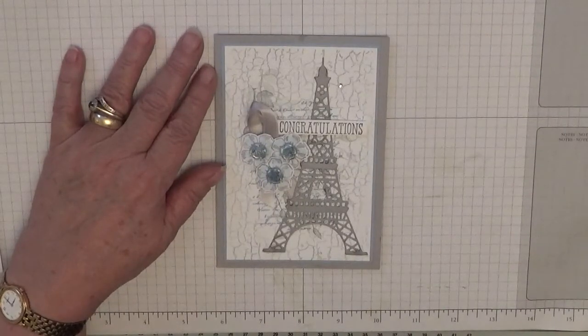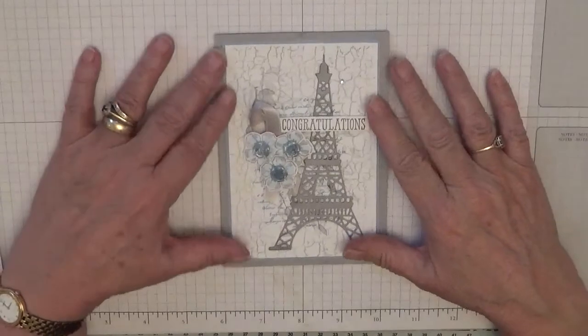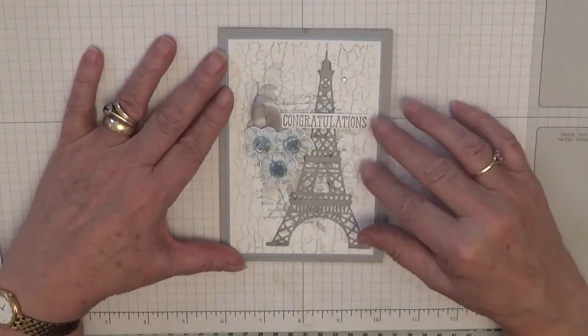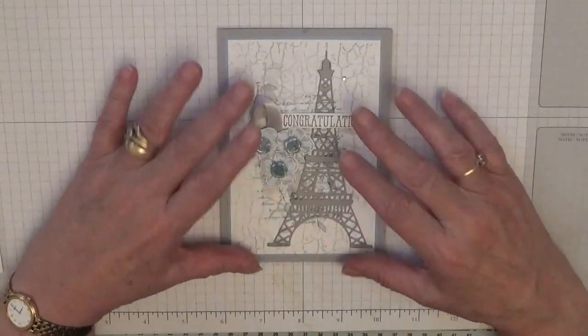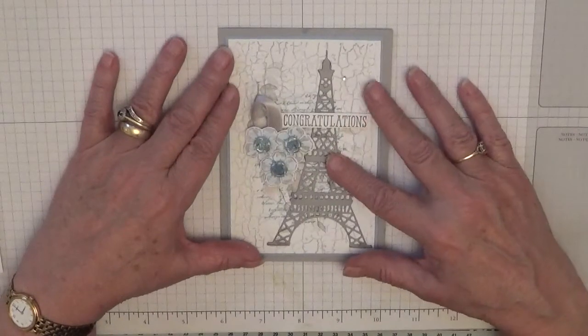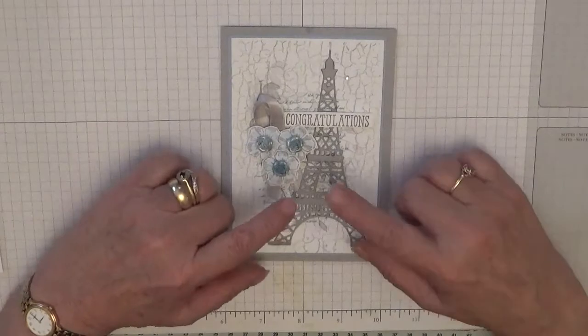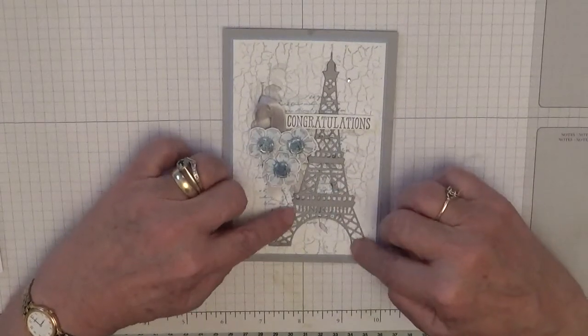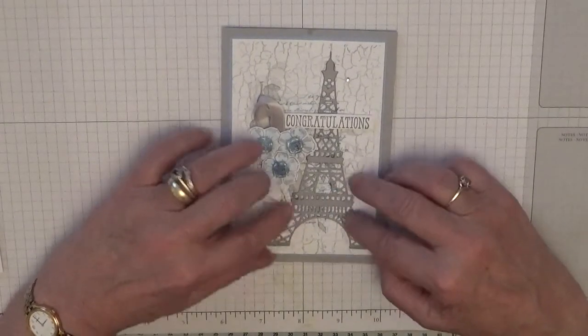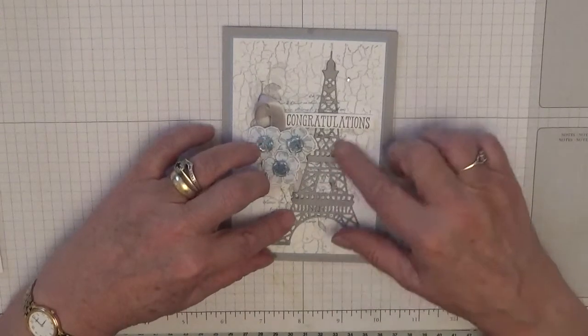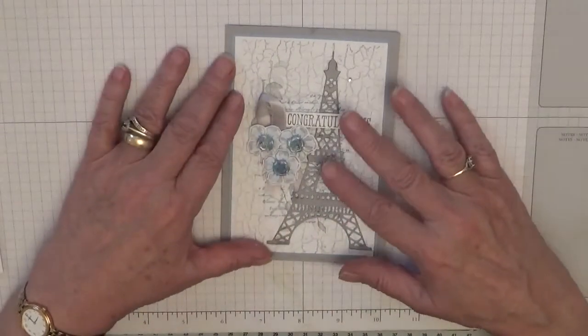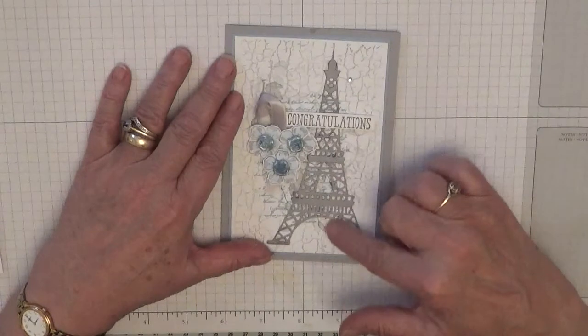Hello everybody, Georgie Burns here. Today I'd like to show you how I made this card, or we're going to make a card similar to this. It's my daughter's birthday, my oldest daughter's birthday coming up soon and she loves Paris, so I thought I'd make her a card with the Eiffel Tower on.